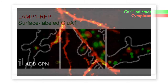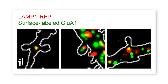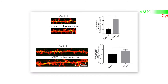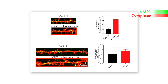The researchers found that internalized AMPA receptors traffic to LAMP1-positive structures in and around dendritic spines. Since the internalization and degradation of membrane proteins like AMPA receptors is regulated by synaptic activity to promote synaptic remodeling, Gu et al. investigated whether synaptic activity also affected the trafficking of lysosomes to dendritic spines.